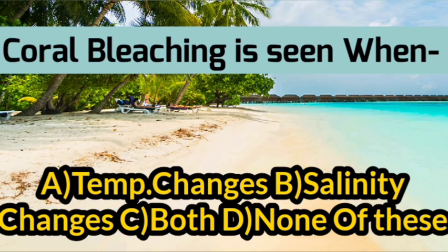The next question asks when coral bleaching is seen. The correct option is C — both temperature changes and salinity changes cause coral bleaching in the ocean.